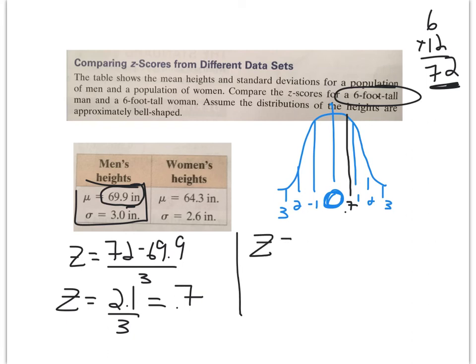The z-score equals 72 inches for a 6-foot tall woman. If you look at it, the average is 64.3 and the standard deviation is only 2.6. My expectation is that a woman being 6-foot tall is more unusual than a man. Simplify your numerator and divide it by 2.6.